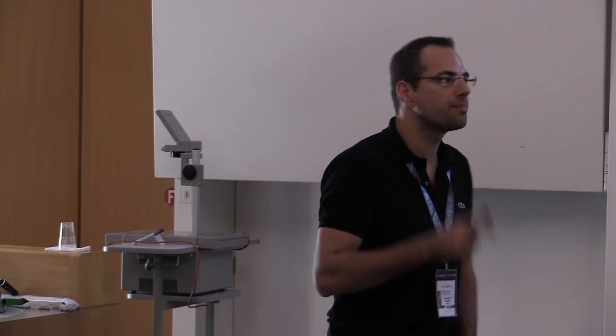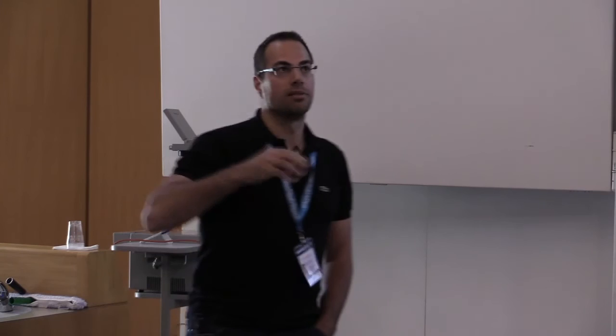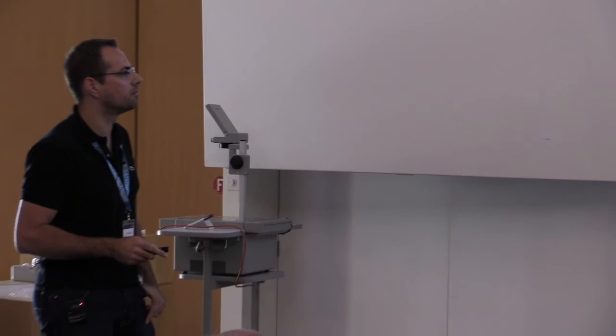We speak here in terms of a location and a scale matrix — but those are not necessarily the mean of X and the covariance of X. If the mean of X exists, then it is indeed equal to the location, but it doesn't have to exist — it depends on the radial part. If the covariance matrix of X exists, it equals sigma multiplied by a factor that contains information about the radial part. You saw the same before: for the multivariate t, the covariance involves nu divided by nu minus 2 — that's essentially that factor. So be very careful with mean and covariance here.